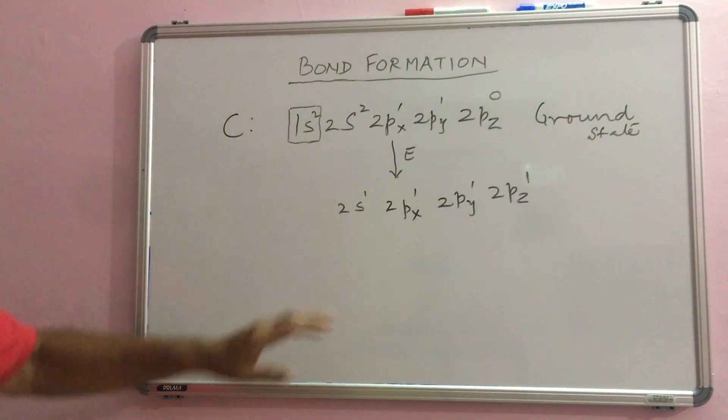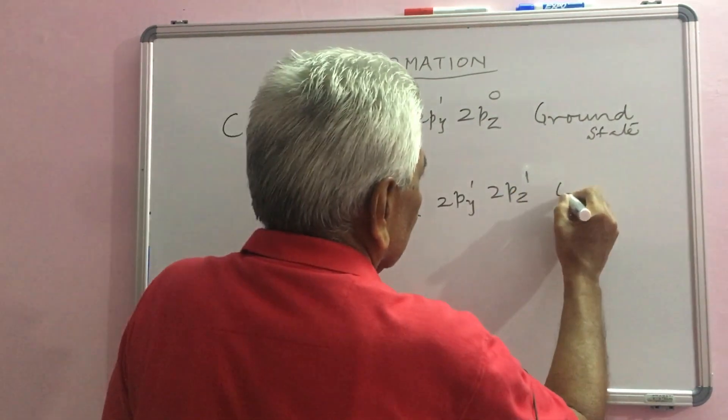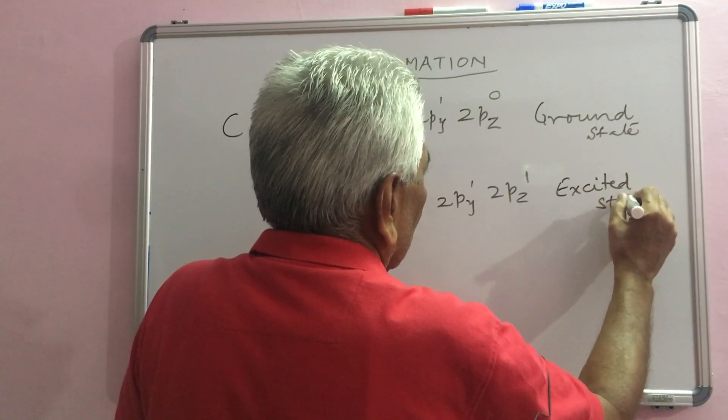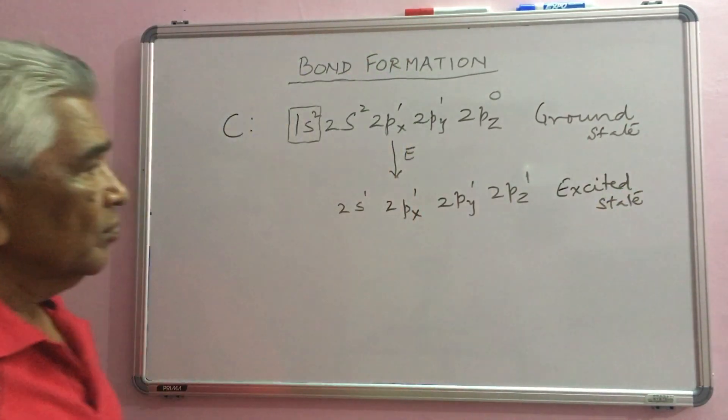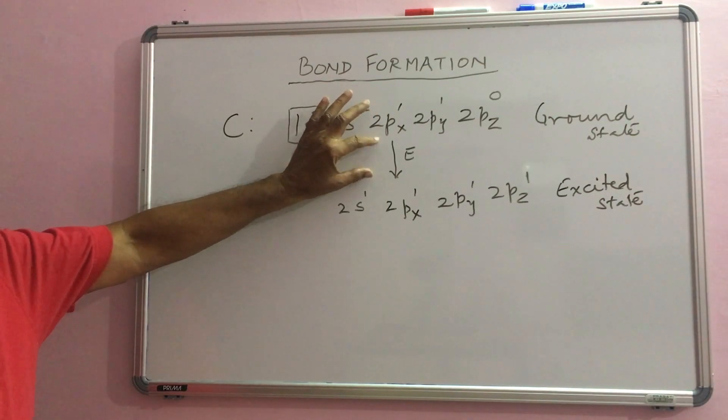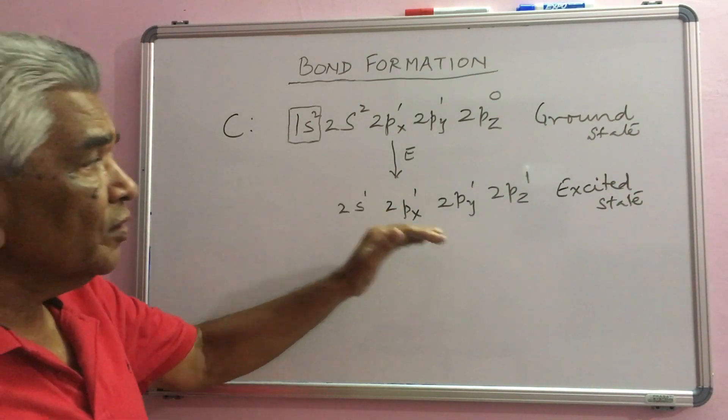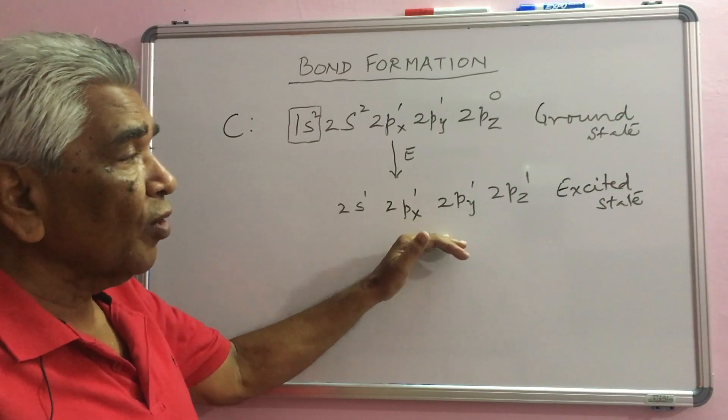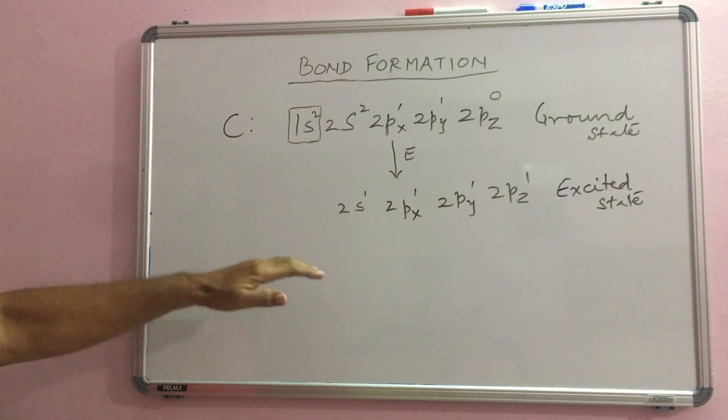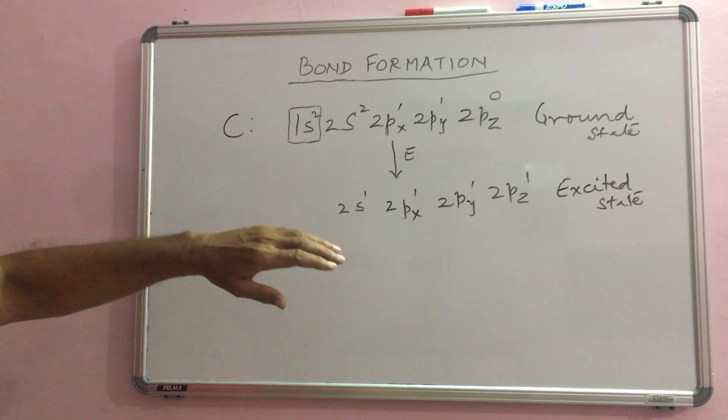This is the excited state. The energy required here is compensated when this carbon atom will form bond later on and that becomes a stable molecule.